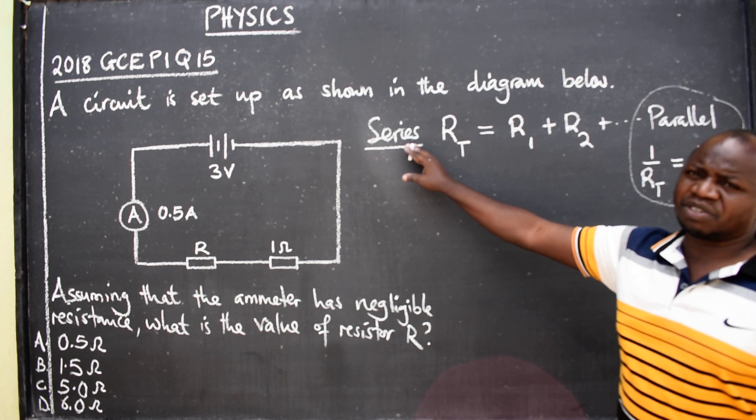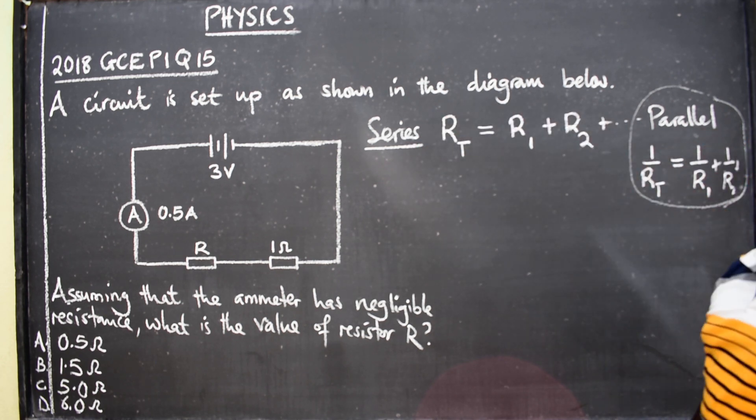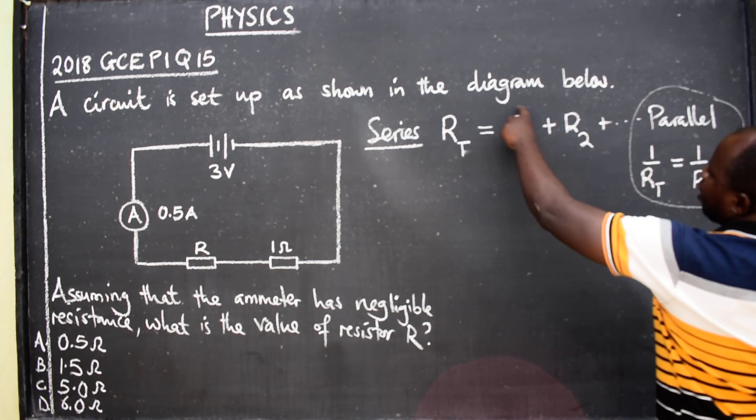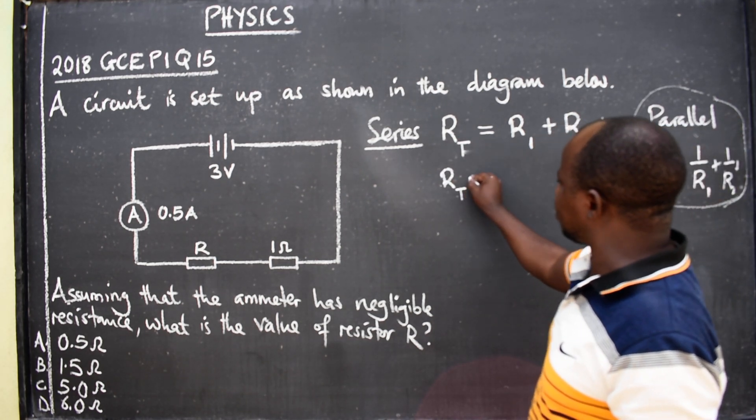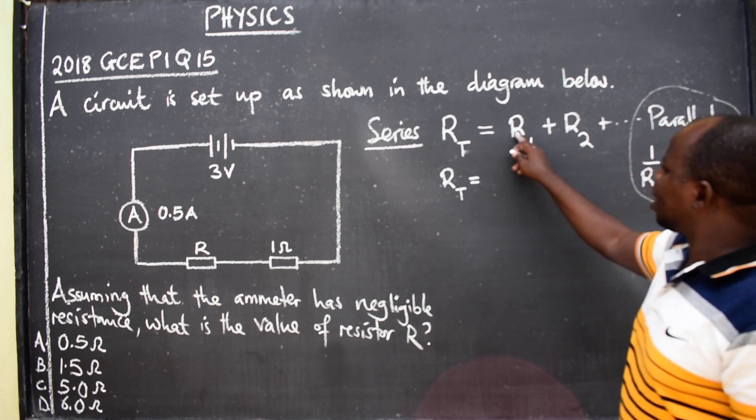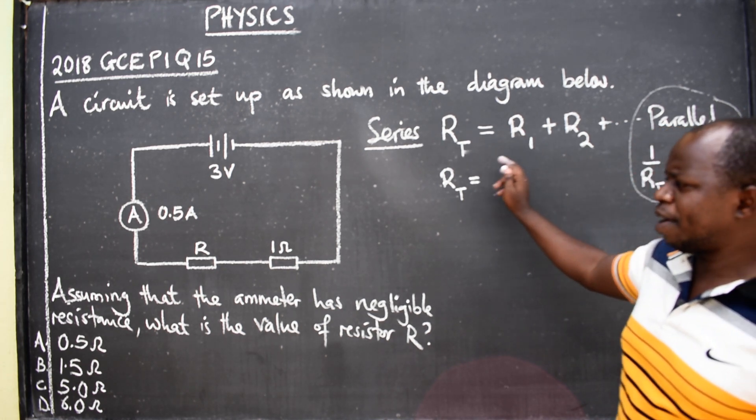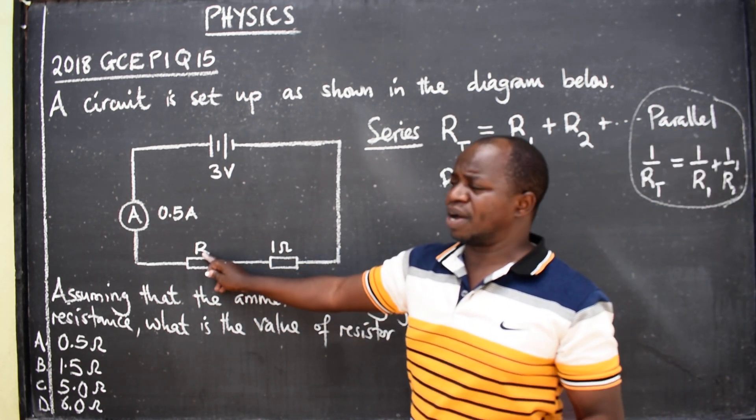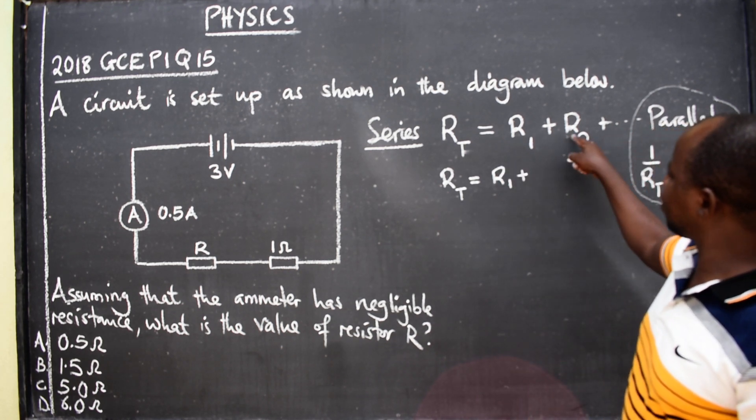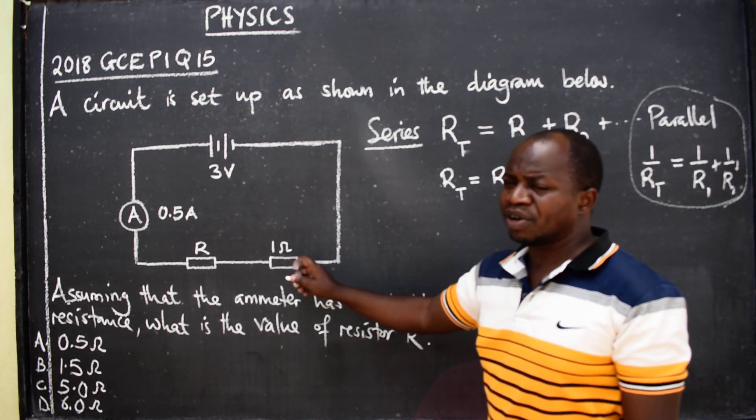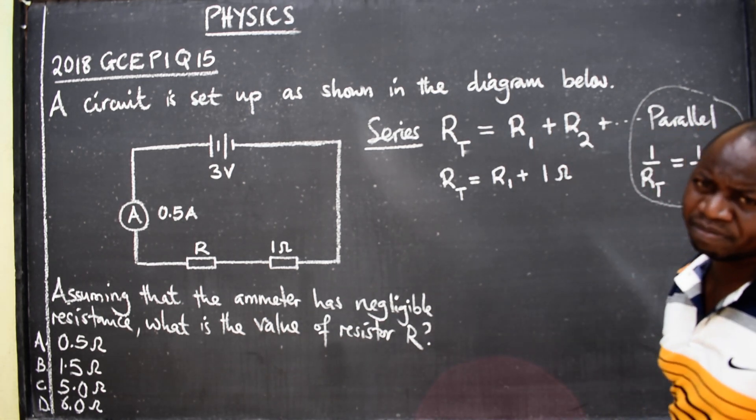But in this case they are in series connection. So this is the equation that we are going to use. So we are going to say that the total resistance will be equal to resistor 1 plus resistor 2, and we have been given that resistor 2 is 1 ohm.